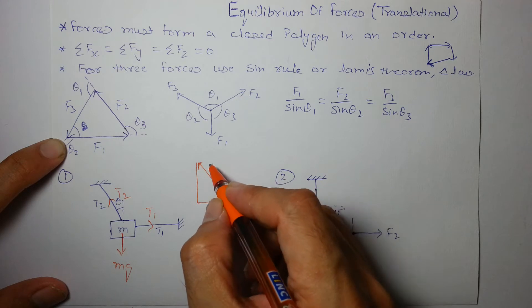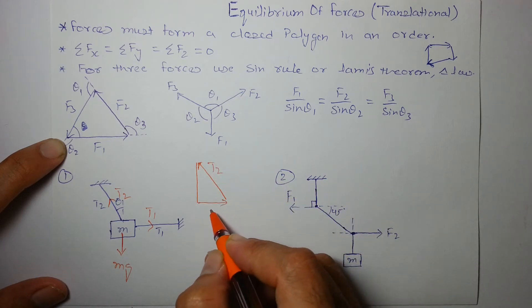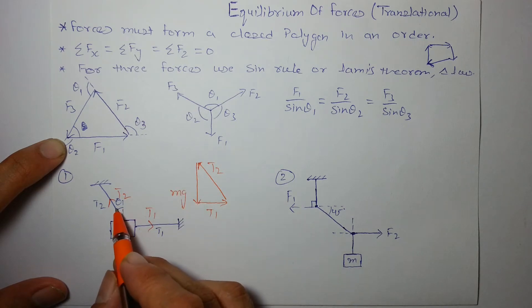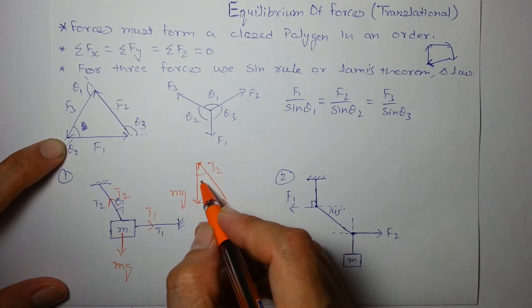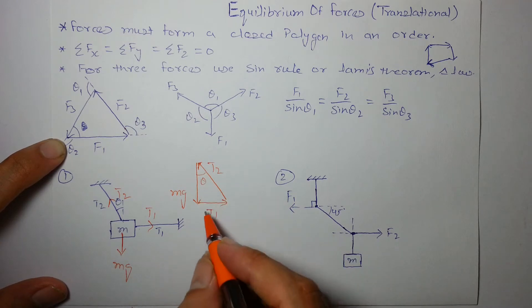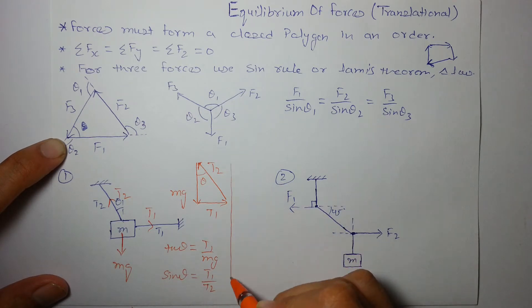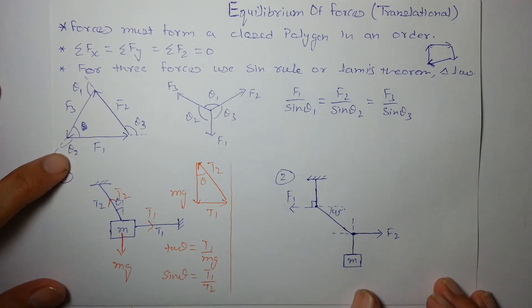And this, this is t2 and this is t1 and this is mg. If you clearly watch, that angle made by t2 with vertical is theta. So, from this triangle, I can use sine theta tan theta. Let's say tan theta is t1 by mg. What about sine theta? Sine theta is t1 by t2 and cos theta so on. I can form a triangle and find the forces by using simply sine tan cos.